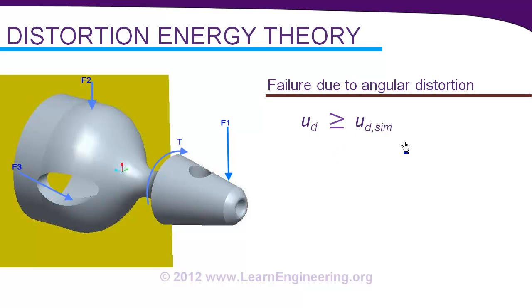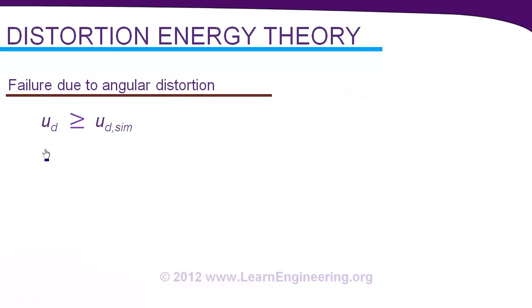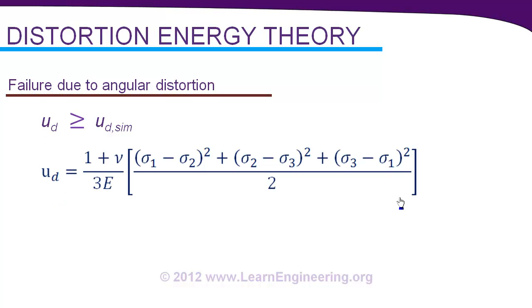So the first thing you need an expression for distortion energy. This is the equation for that. Where sigma 1, sigma 2, sigma 3 represent principal stresses inside the material. And principal stresses represent maximum or minimum normal stress inside the material at a given point. And you can deduce values for these stresses using stress analysis.